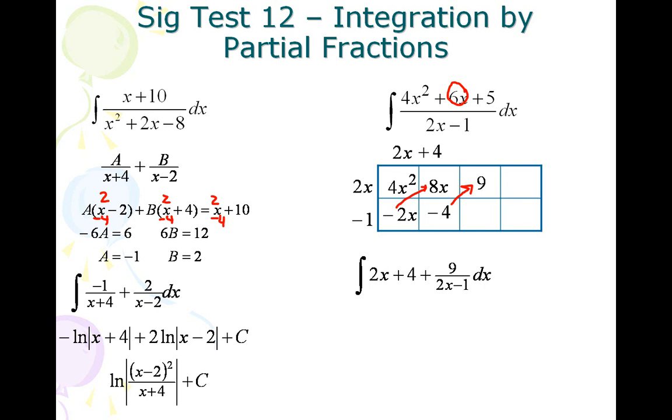We do our anti-derivative. We get x squared plus 4x plus 9 times the natural log of 2x minus 1 plus c.